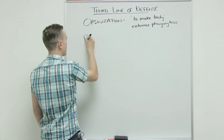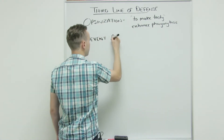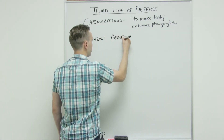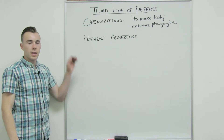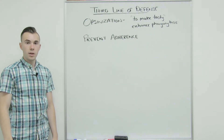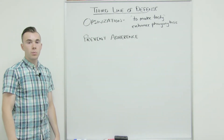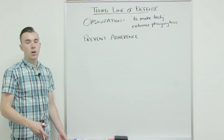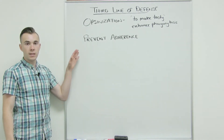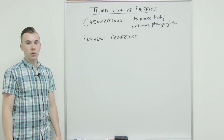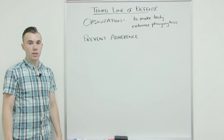Another function is that antibodies prevent adherence. The prevention of adherence applies to bacteria. Antibodies attach to structures such as fimbriae and pili to prevent the bacterium from being able to attach to a surface where it would then colonize and cause disease. The antibodies prevent the bacteria from attaching, which allows them to be cleared out through the immune system before they can cause disease.